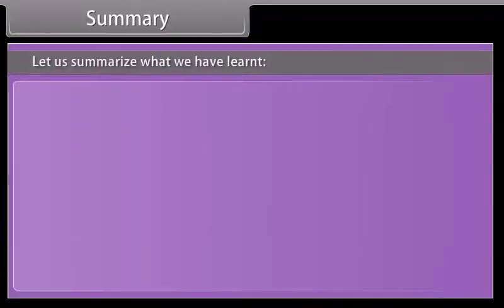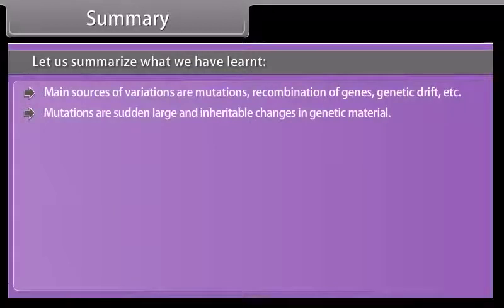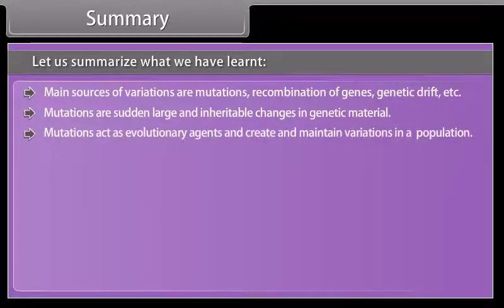Let us summarize what we have learned: Main sources of variations are mutations, recombination of genes, genetic drift, etc. Mutations are sudden, large, and inheritable changes in genetic material.